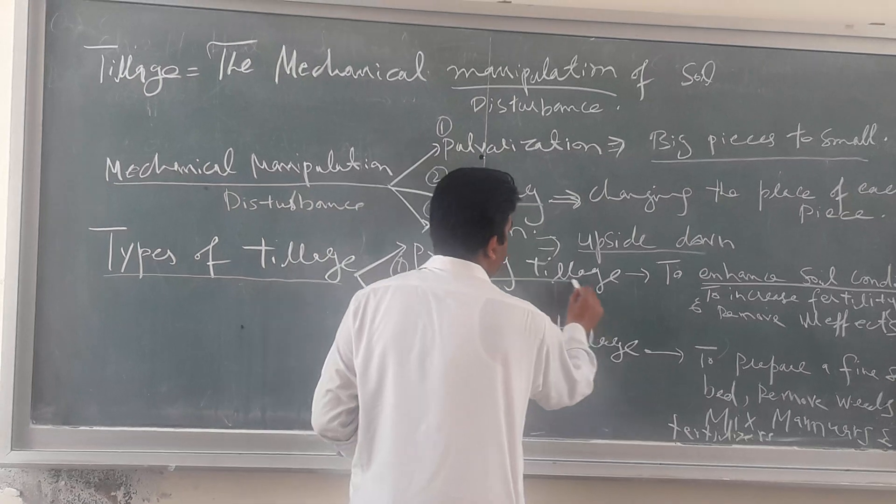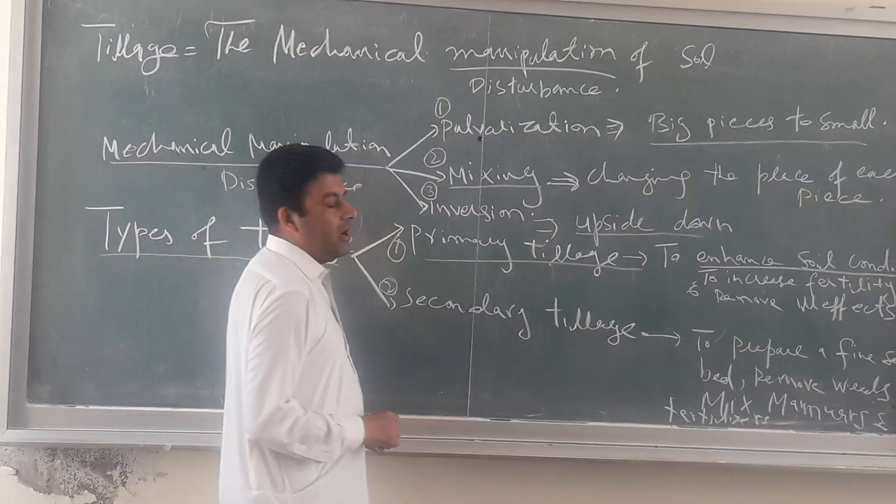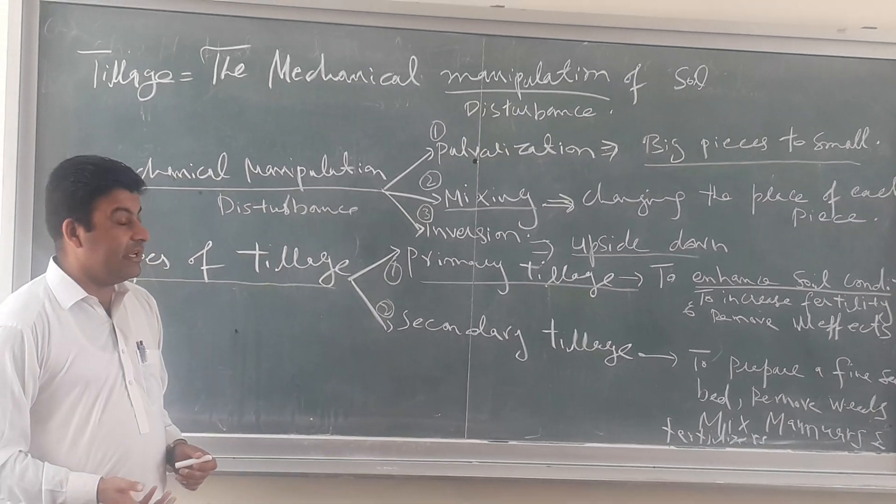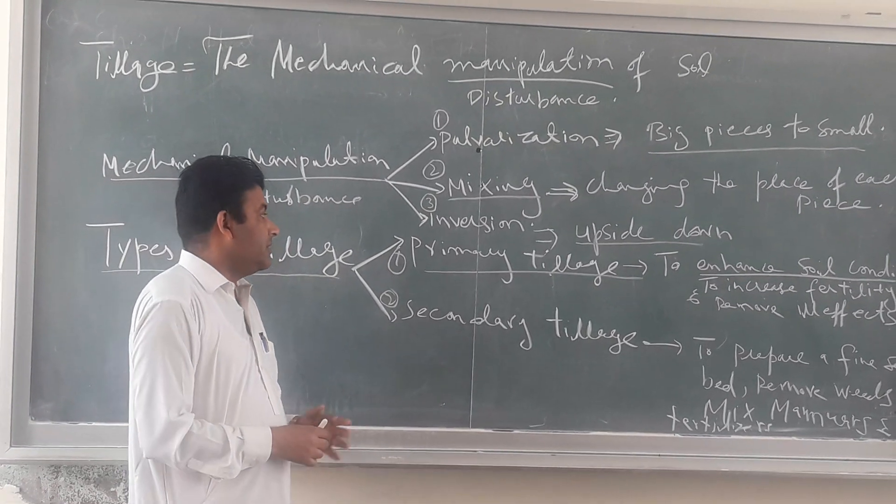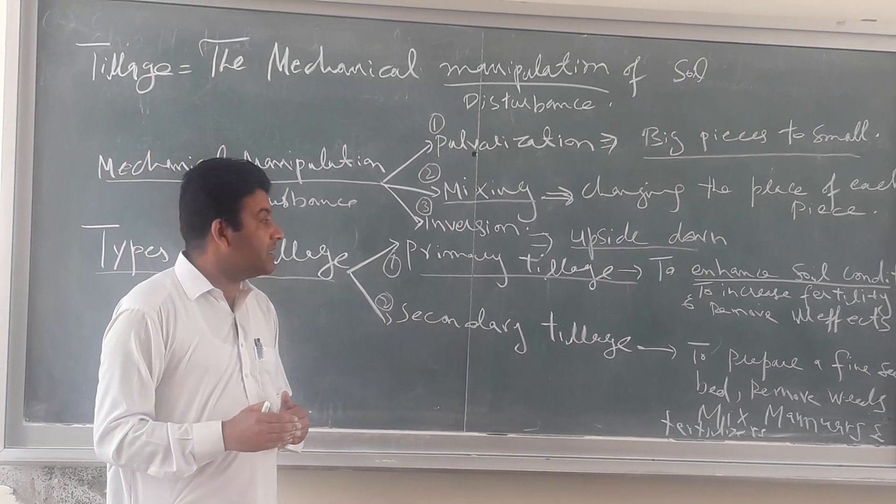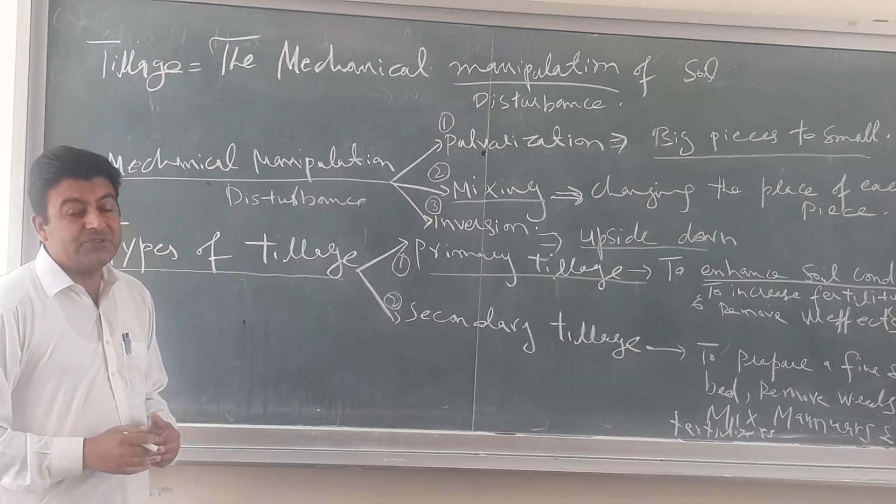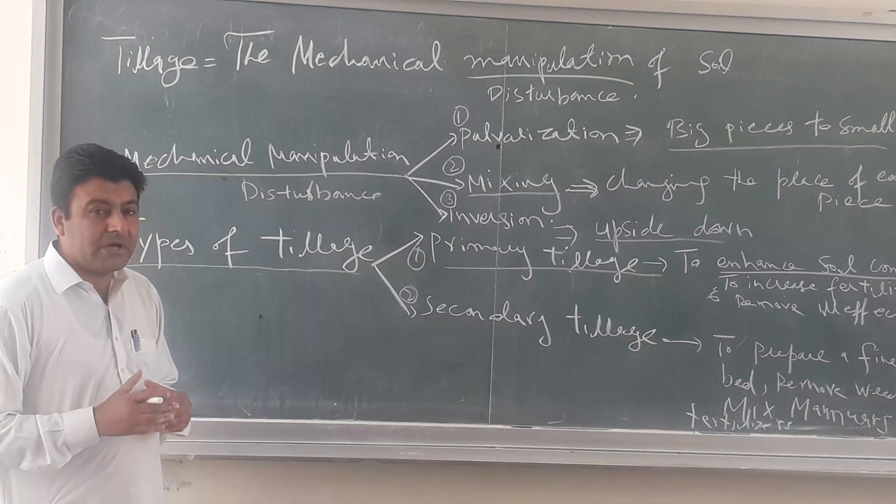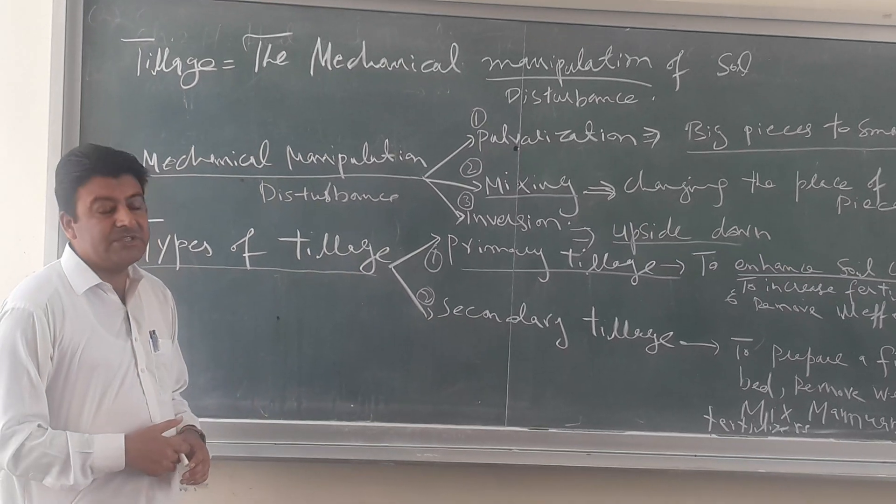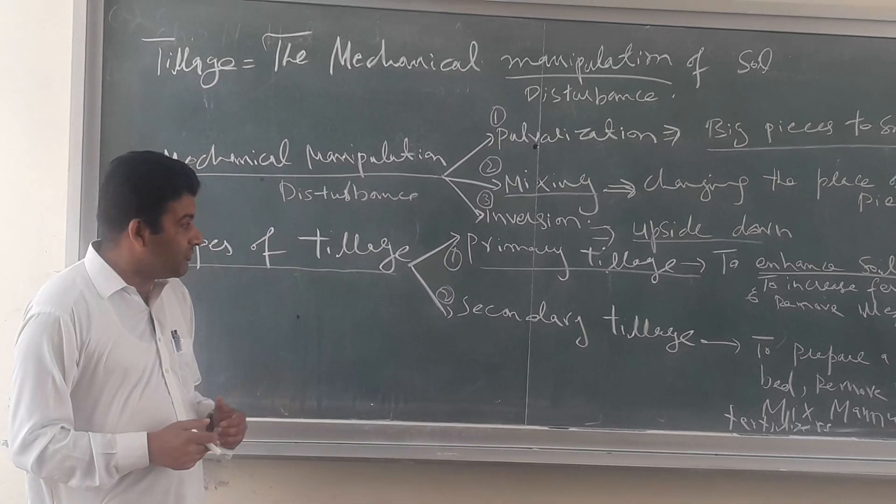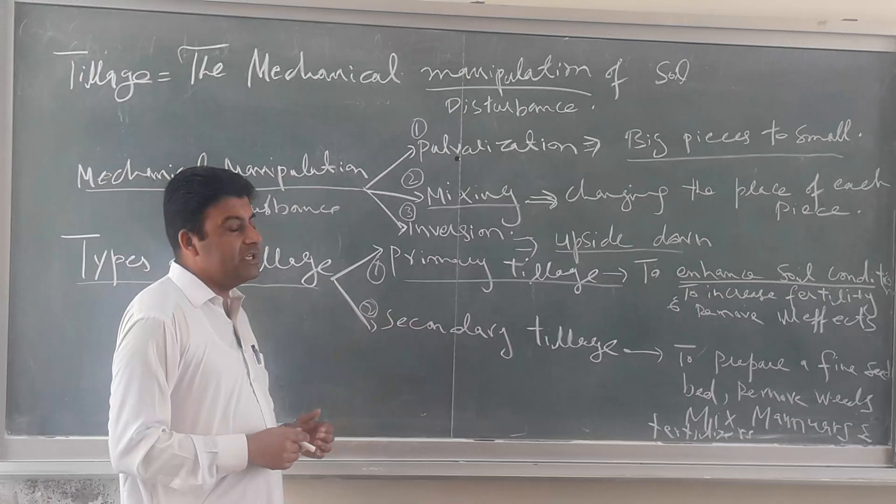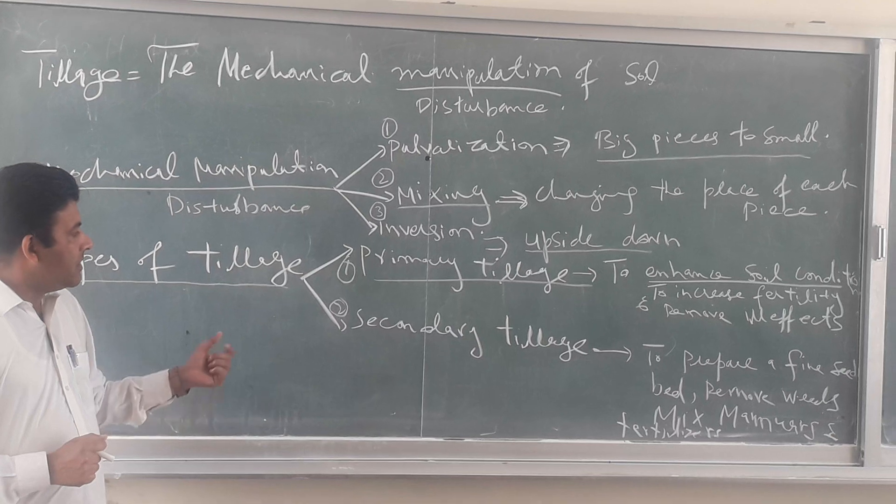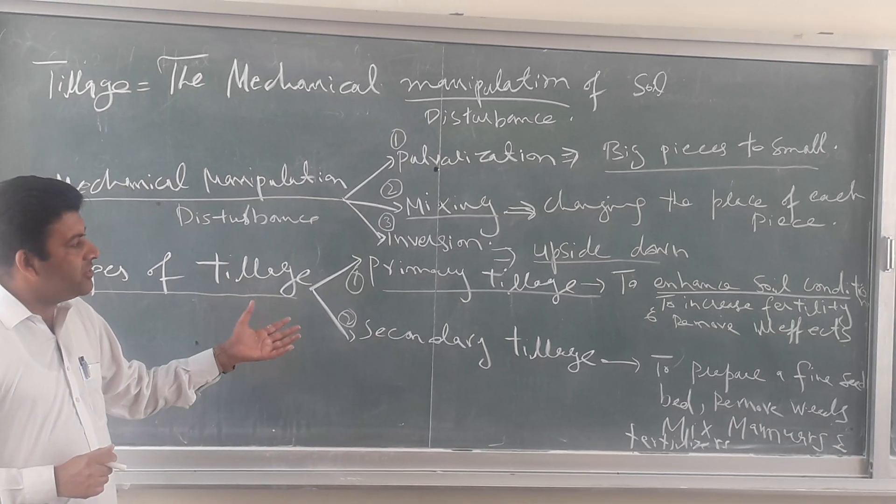Primary tillage is actually performed to enhance the soil condition and to remove the ill effect from the soil and increase its fertility. Primary tillage is actually to enhance the soil condition. If soil is infertile or something is bad, then we remove it from the tillage. So with the help of primary tillage, we remove the ill effects from the soil and increase the fertility of the soil.